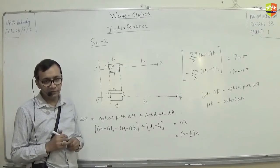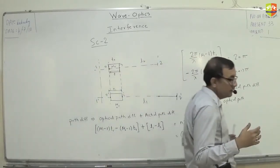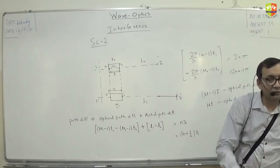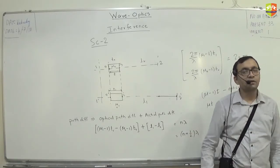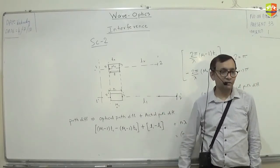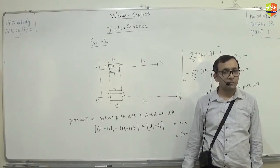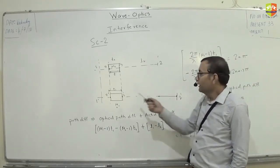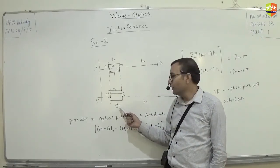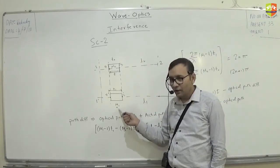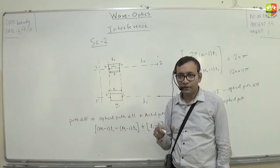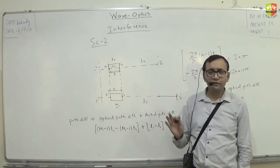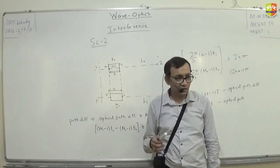There can be many different kinds of scenarios. We've discussed only selective few that occur more often. For example, if the entire experiment is conducted inside water, the wavelength changes — it becomes λ/μ. So wherever lambda appears, it becomes λ/μ. Also, μ1 can't be taken as is; you have to take μ1 divided by μ of water, just as in air you divide by μ_air = 1.